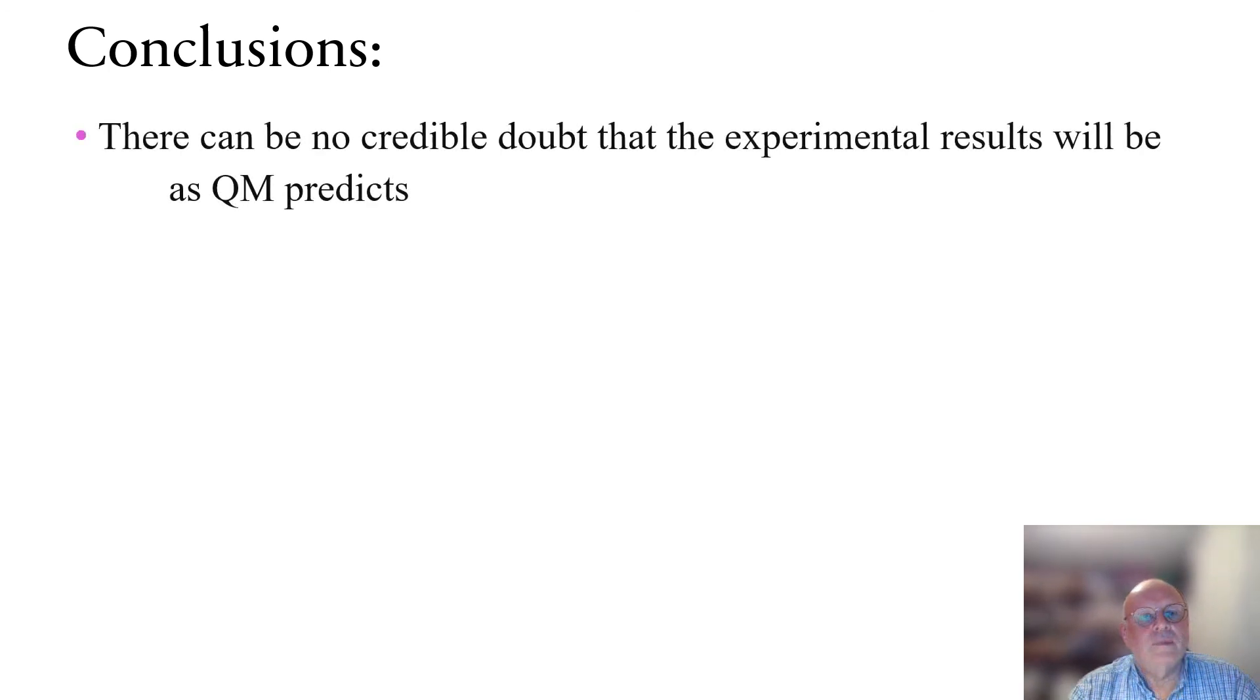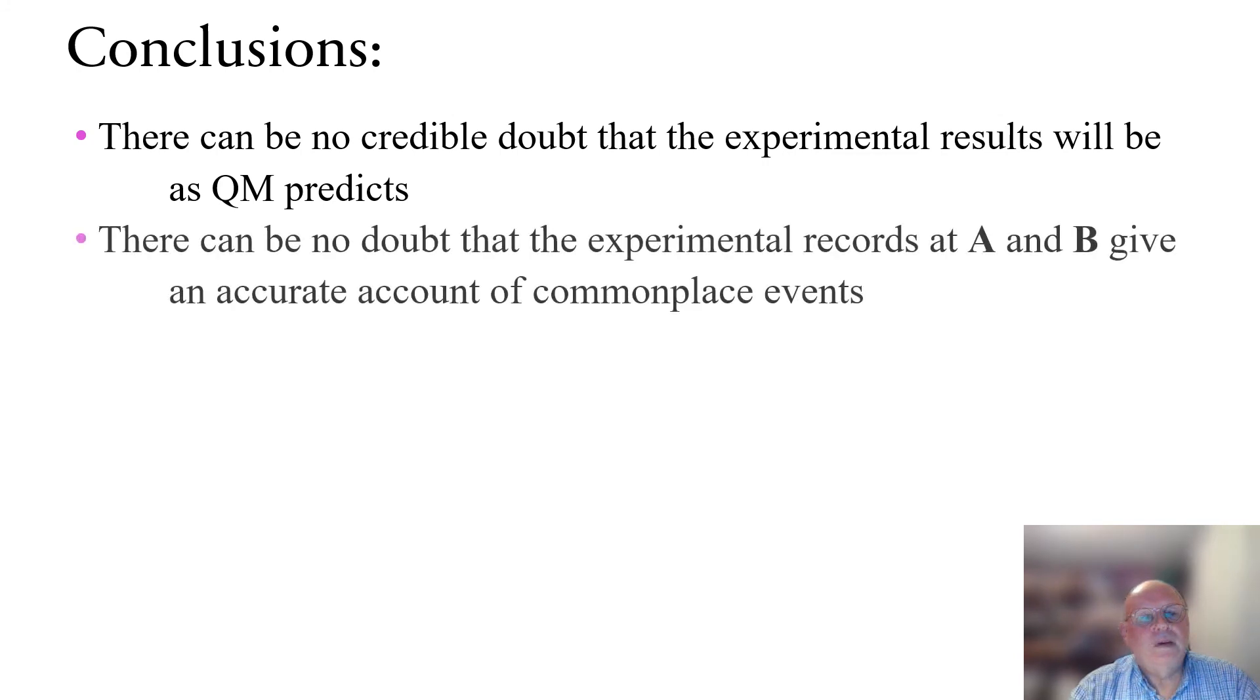What conclusions can we draw from all this? There can be no credible doubt that the experimental results will be as quantum mechanics predicts. And there can be absolutely no doubt that the experimental records at A and B give an accurate and reliable account of commonplace events.